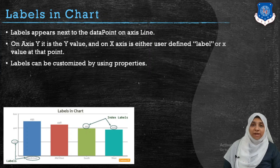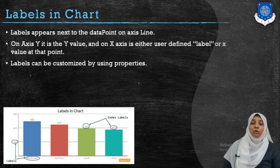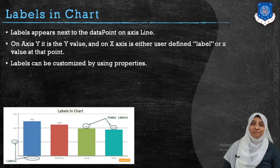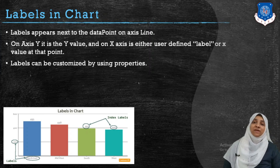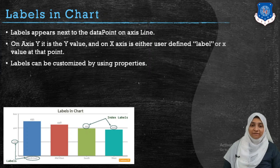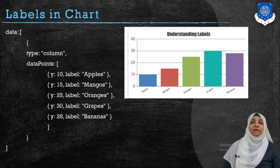There are two types of labels in a chart. The first type is the x and y axis label. Axis labels are displayed over the axis — for example, over the x-axis you might display regions like north, east, west, and south; over the y-axis you might display values like $200, $100, $5000. The second type of label is the index label, which displays a bar's value above or inside the bar itself, and that can also be customized.